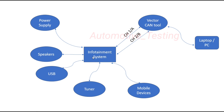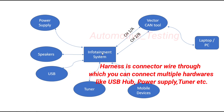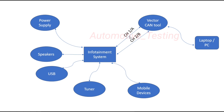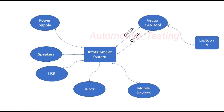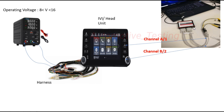There is a CAN network connection. Channel 2 is connected to the IVI engine system. Vector CAN2 is further connected to the laptop or PC through a USB cable. As shown in this diagram, the USB cable from the laptop connects to the Vector CAN2, and Vector CAN2 has Channel 1 and Channel 2 — the white connectors — which are further connected to the harness of the IVI. The yellow connectors are Channel A and Channel 2.